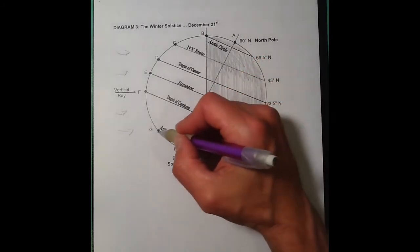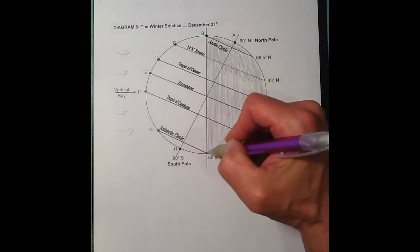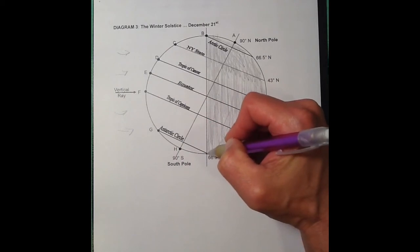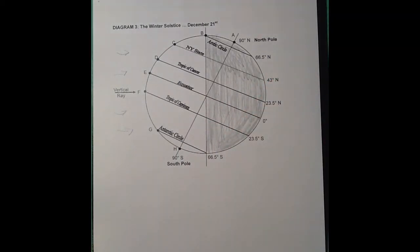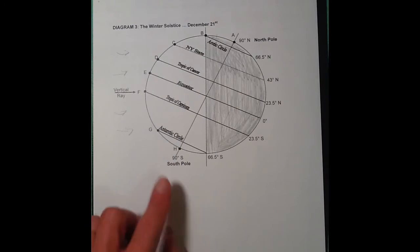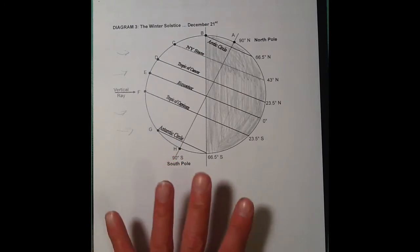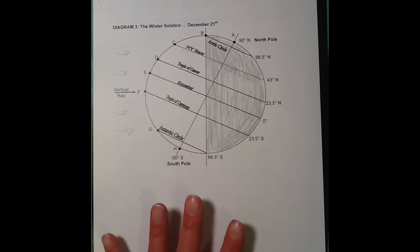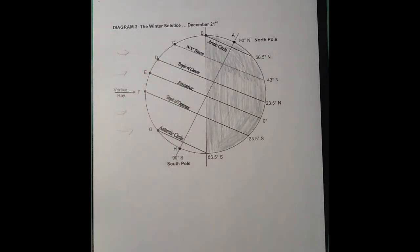The Antarctic Circle would have complete daylight. It would just get to this point here and the sun would be on the horizon. But you'd get 24 hours of continuous daylight at the Antarctic Circle. At the South Pole, you'd also get 24 hours of continuous daylight. So, this sort of side view, equatorial view, you can estimate the number of daylight hours for different locations.